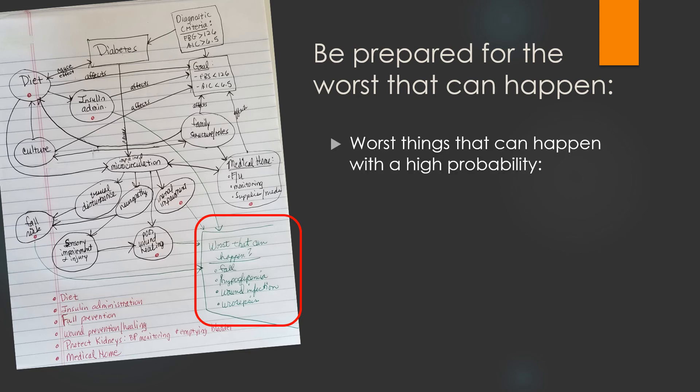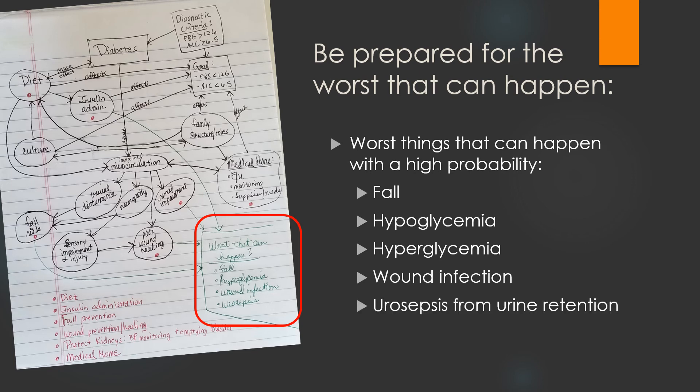Here are some of the worst things that can happen with a high probability that I listed. A fall could happen. Hypoglycemic episode after insulin administration. Hyperglycemia. How would I know and how would I treat that? Wound infection. What are the signs and symptoms of a wound infection? Urosepsis from urine retention. Urosepsis can happen very, very quickly, especially in immune compromised patients. And urine retention in a diabetic is a possibility because of the neuropathy.